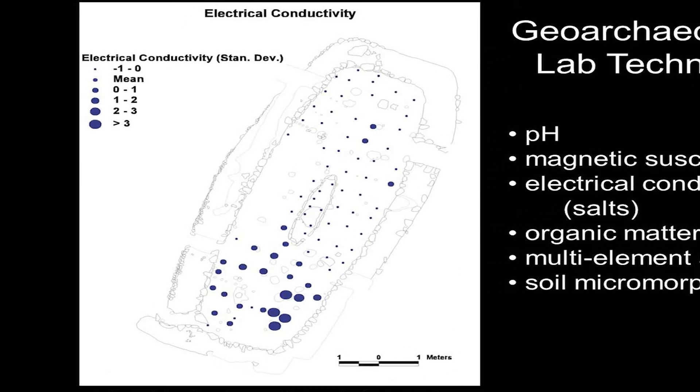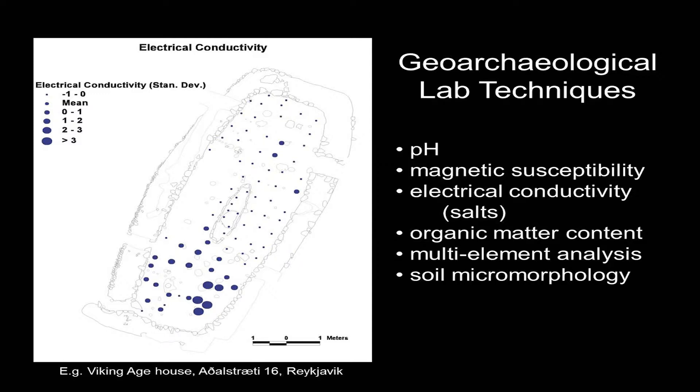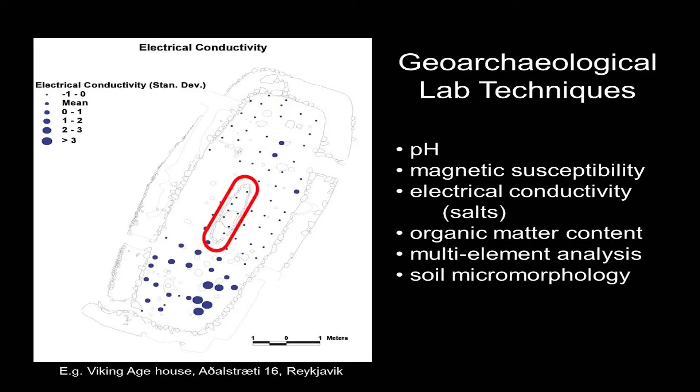This is being displayed on the plan of a Viking Age house based in Iceland, but we have lots of them here in Scotland as well. As you can see, the patterns are different in different parts of the house, and there is one particular corner that has really high soluble salt content — that's probably related to either seaweed salt being deposited or urine. Other techniques we use include pH, which gives us information about preservation conditions, because things like bone will completely disappear if the pH is very low in very acidic environments. Magnetic susceptibility is a technique that allows us to test the magnetic properties of a soil or sediment — that tells us whether it's been heated or burnt, for example, and it can tell us where the hearths are.